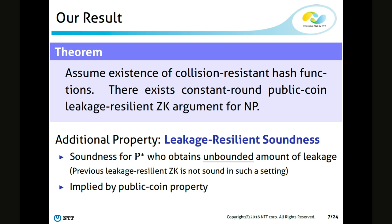I also want to note that even though this work uses a weaker assumption, the protocol additionally satisfies a property called leakage resilient soundness, which is soundness against a cheating prover who obtains an unbounded amount of leakage from the verifier's secret state. Leakage resilient soundness alone is not so hard to satisfy — any public coin zero knowledge is already leakage resilient sound. However, satisfying both leakage resilient zero knowledge and leakage resilient soundness simultaneously is not easy, and previous leakage resilient zero knowledge protocols don't satisfy leakage resilient soundness. So the protocol of this work is the first to satisfy both simultaneously.